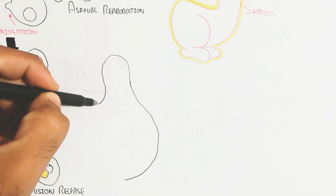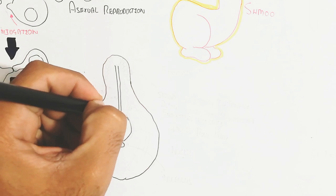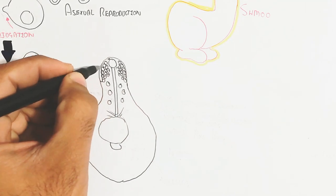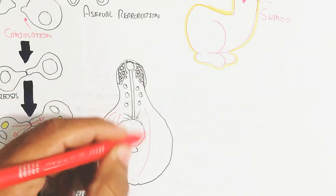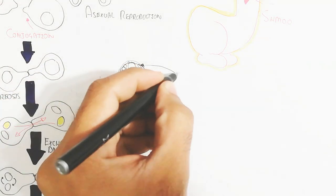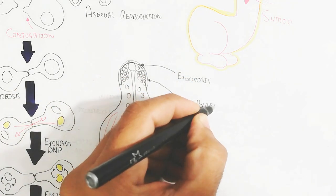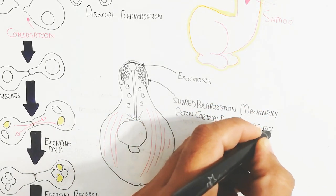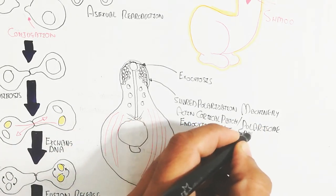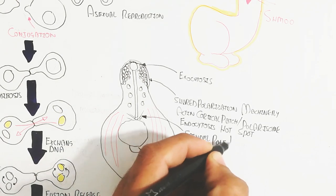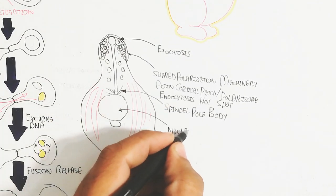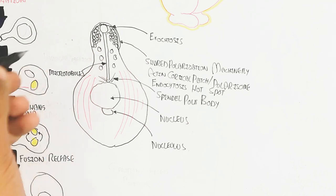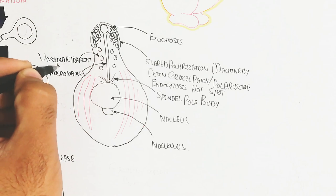This structure involves exocytosis. This is a unicellular eukaryotic yeast containing a nucleolus and nucleus. The black circle represents the shared polarization machinery: actin cortical patch, polarisome, and endocytosis hot spots are present. The spindle pole body is also present. This is the anatomical aspect we are understanding. Next we will look at the cellular signaling pathway and vesicular trafficking involving microtubules.